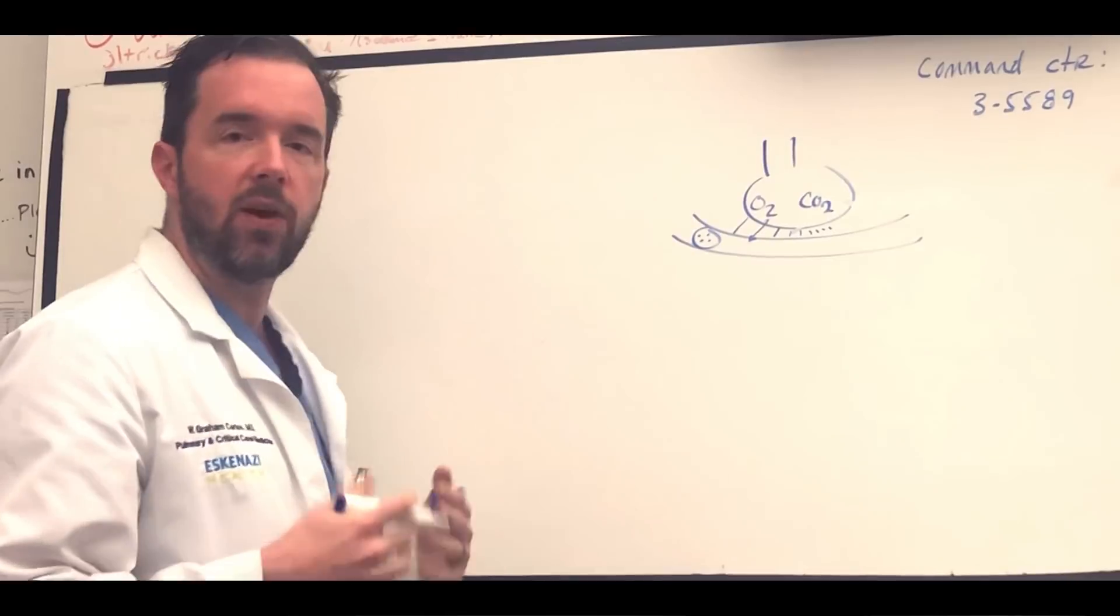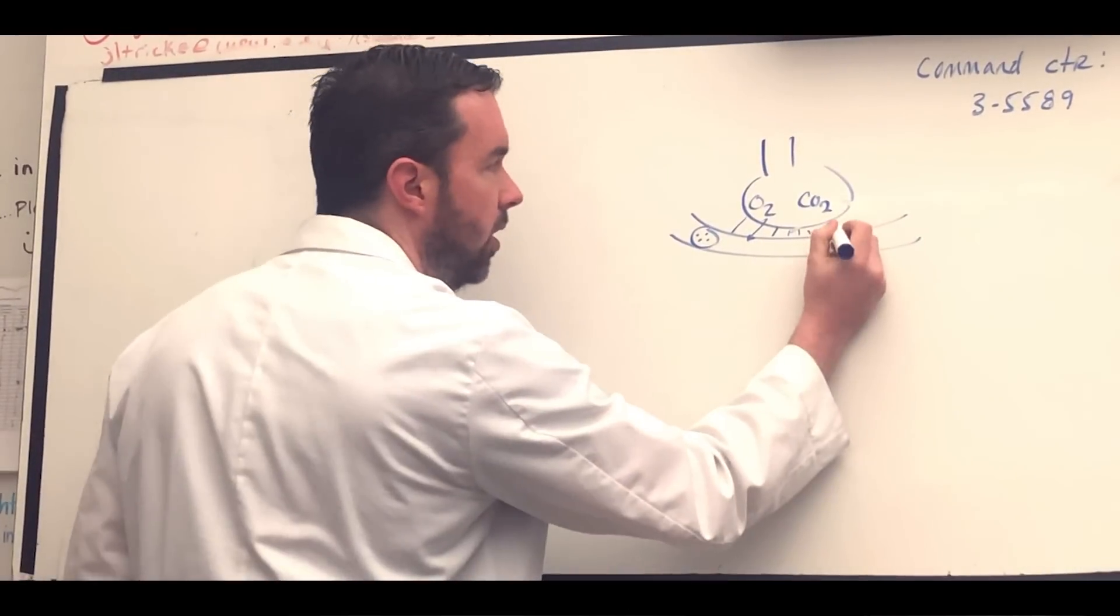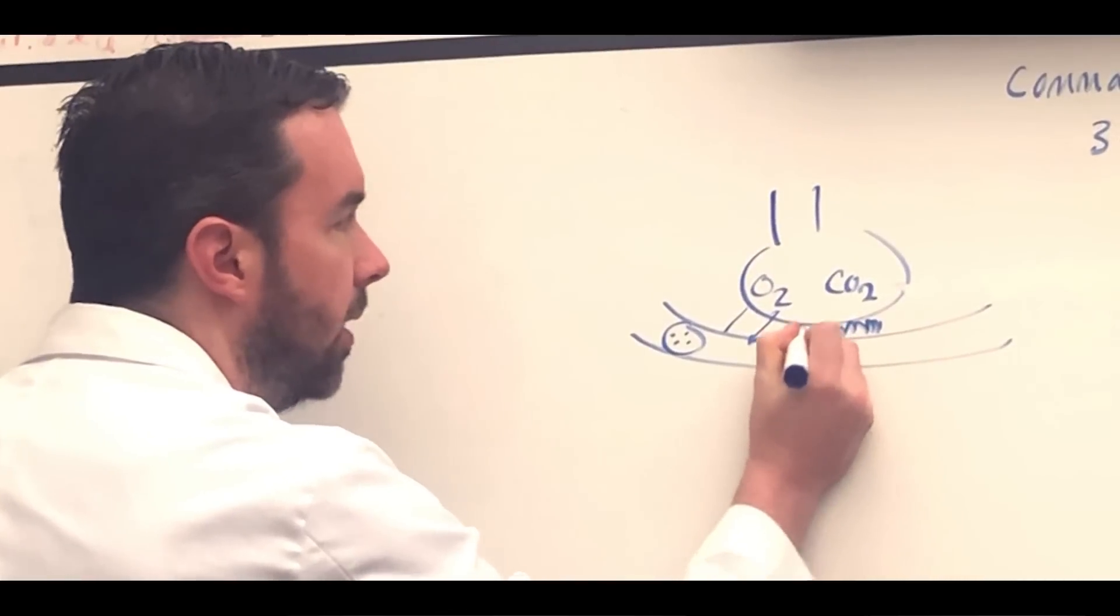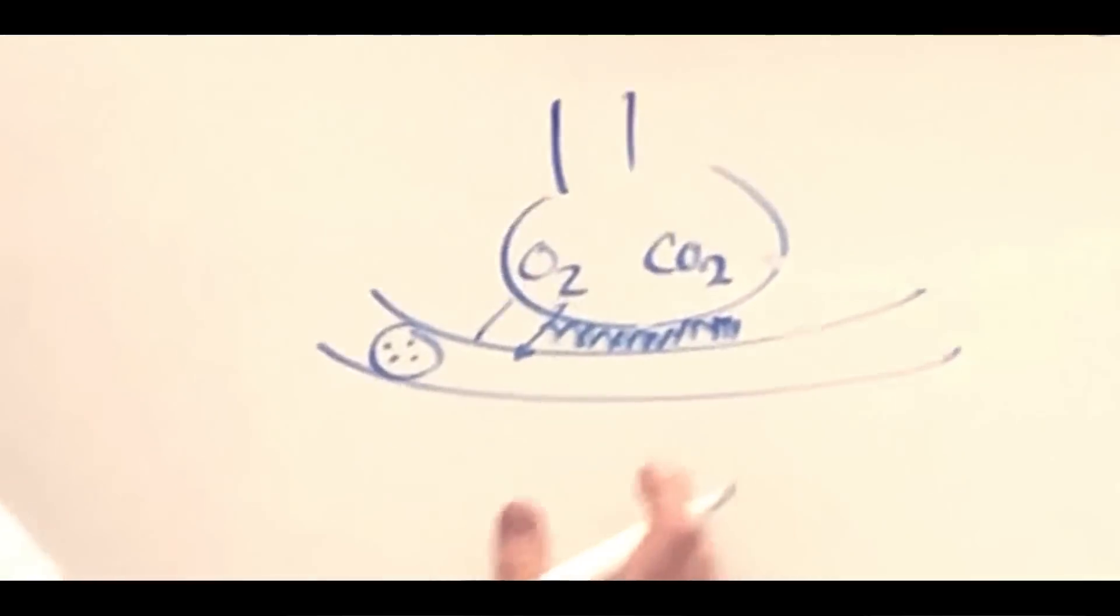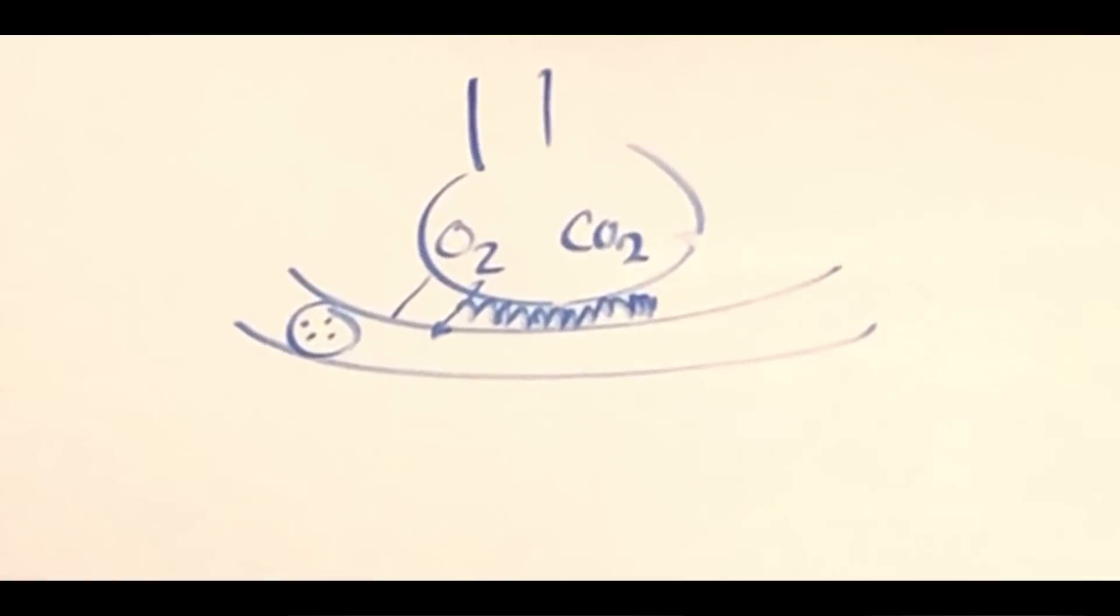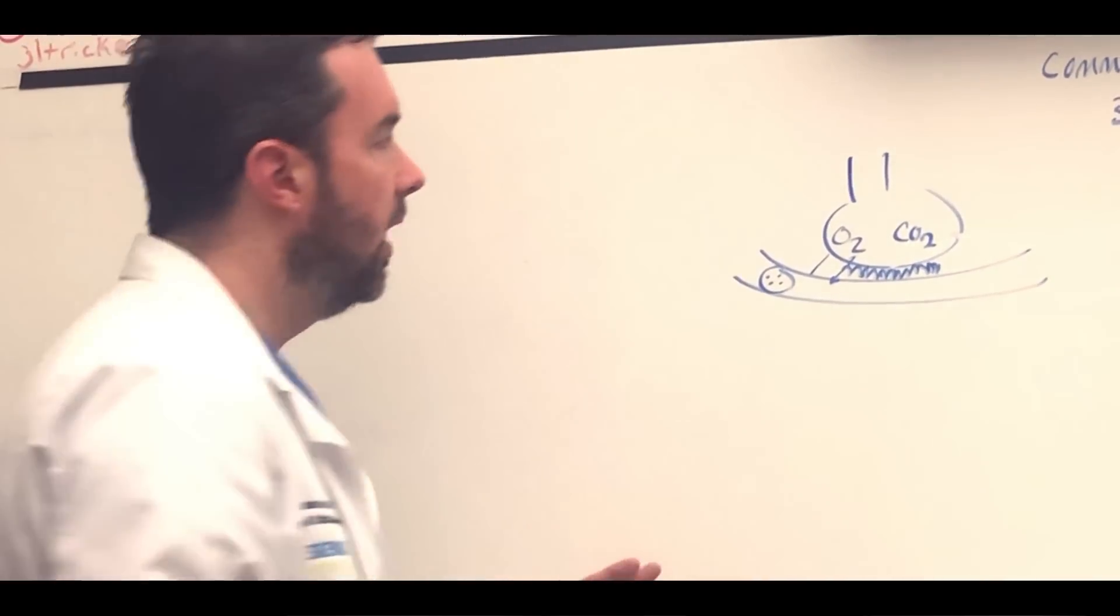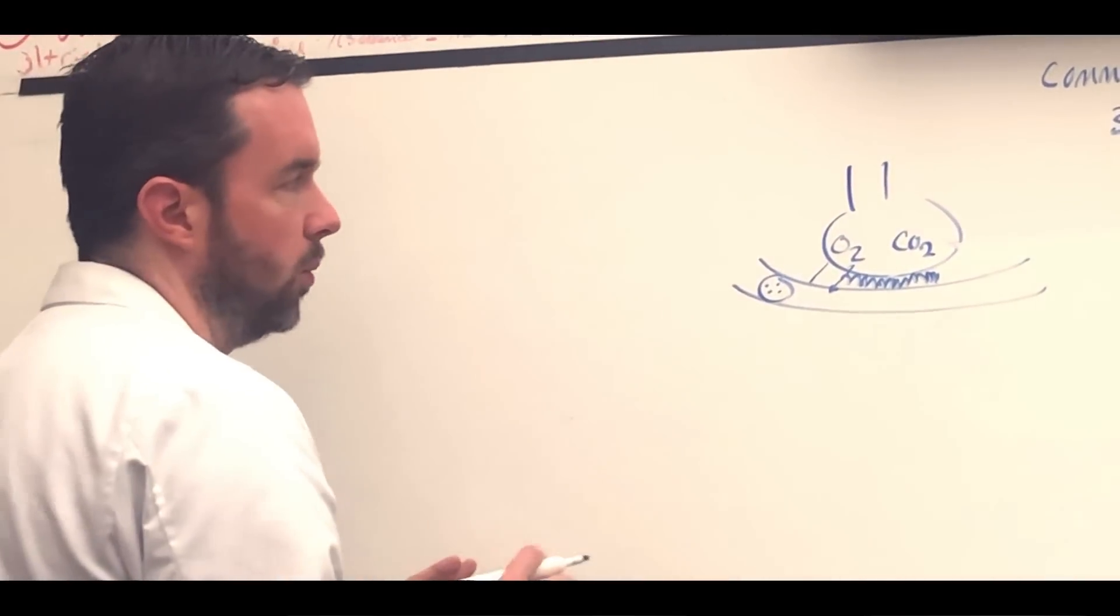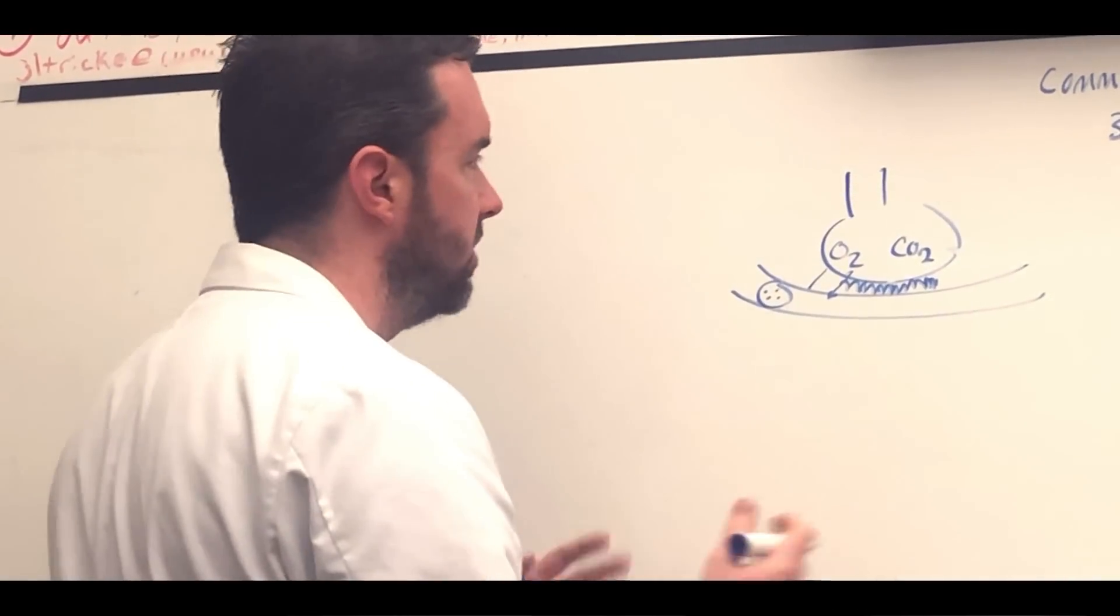In diseases that affect oxygenation, what happens is we start blocking this membrane, let's say like ARDS. So now as the blood flows past, it becomes harder and harder for oxygen to diffuse across. That's one concept that we're going to revisit as we talk about our approaches to oxygenation.